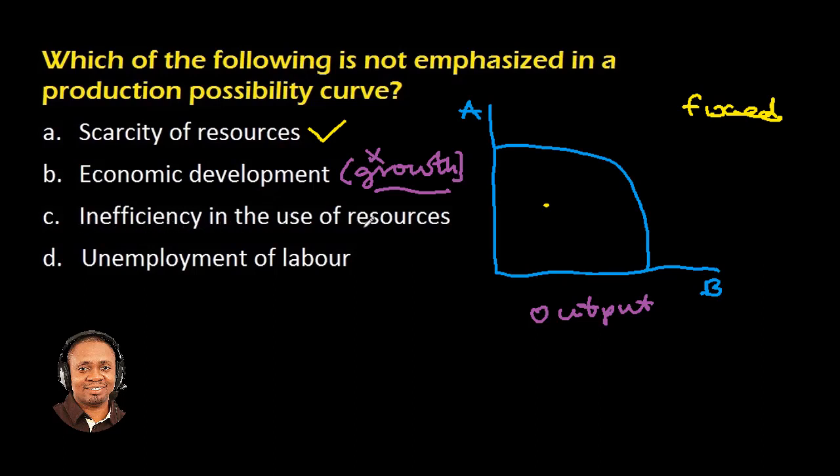What about option C? Inefficiency in the use of resources. Whenever there is inefficiency in the use of resources, like scarcity of resources, it is going to be signified right within the production possibility curve. So this is indicated in the PPC curve.